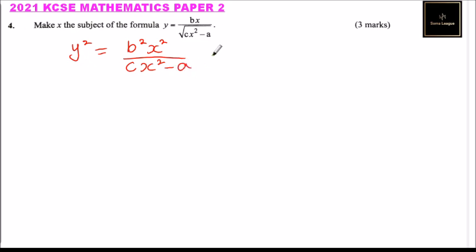So you cross multiply. When you cross multiply, you get cy squared x squared minus y squared a equals b squared x squared.